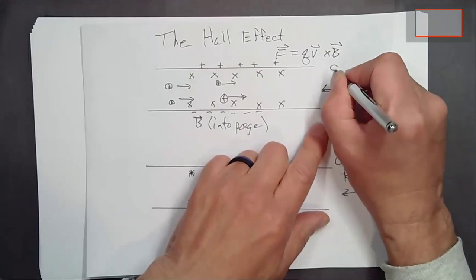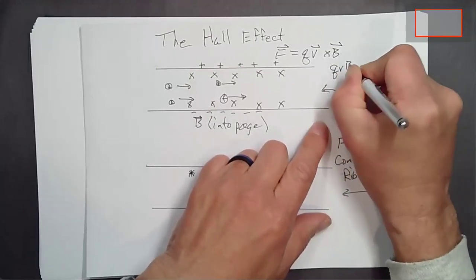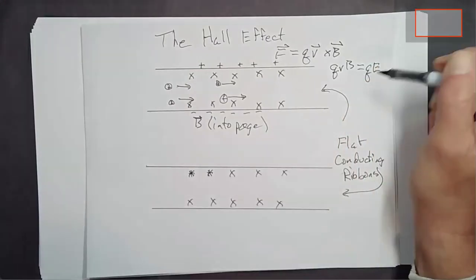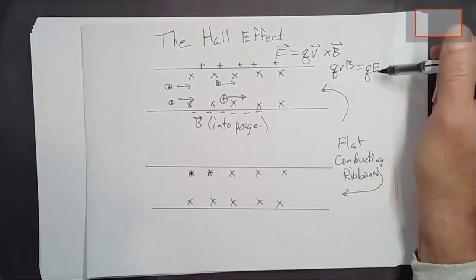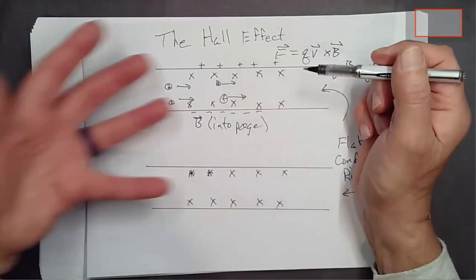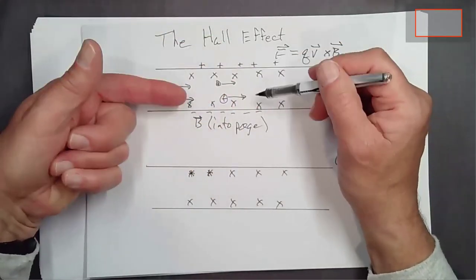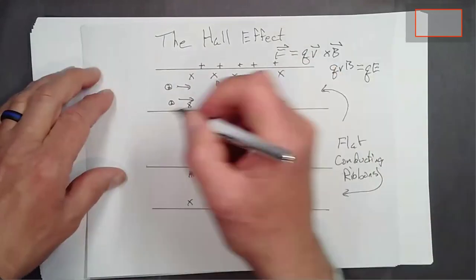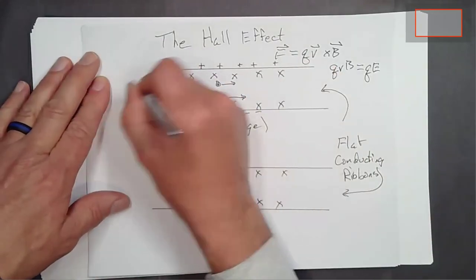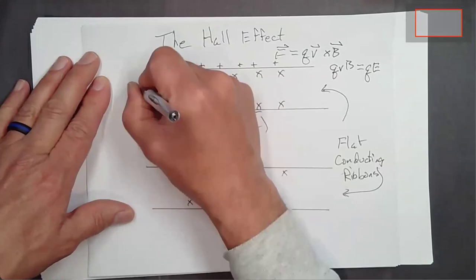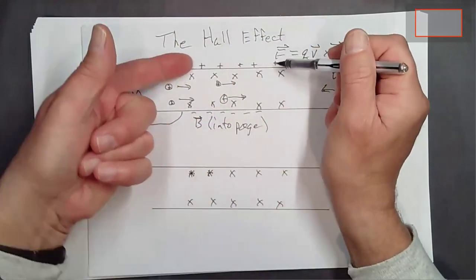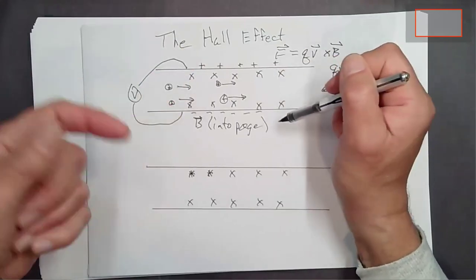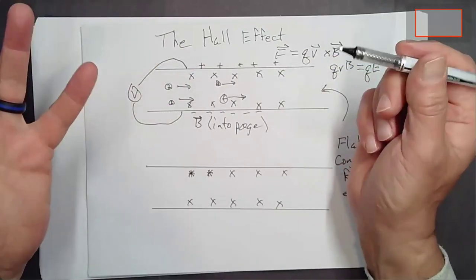This doesn't build up forever. It reaches a point where there's a downward electric field in here, and that downward electric field will balance the magnetic force on the charges. Once that's the case, you'll have QVB equaling QE. They'll be balanced. However, if you hook up a voltmeter to this thing, you'd register the top side as being at a higher potential than the bottom side — and that's measurable.